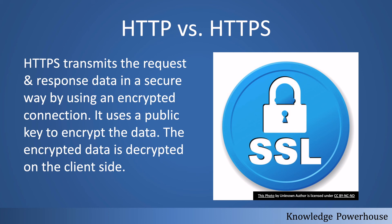In SSL (Secured Socket Layer), we use a public key — this is asymmetric cryptography. We'll have a separate video on that. With asymmetric cryptography, we use a public key to encrypt the data, and then it can be decrypted on the client side using the private key, allowing data to be transferred in a secure way.